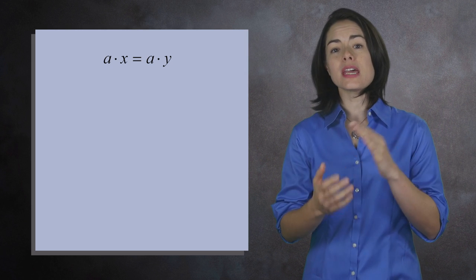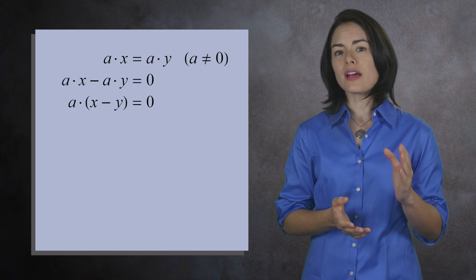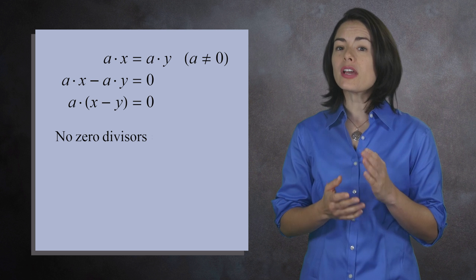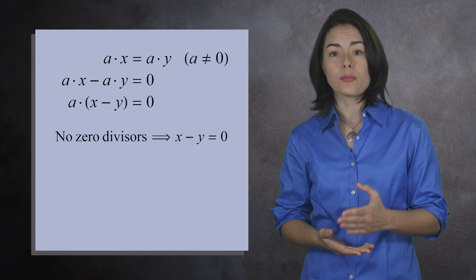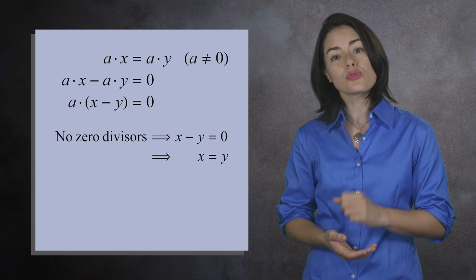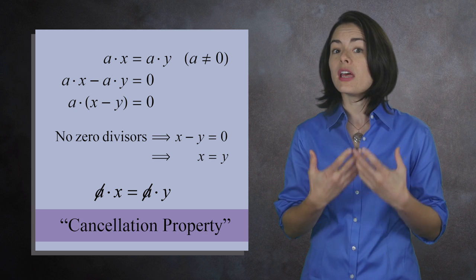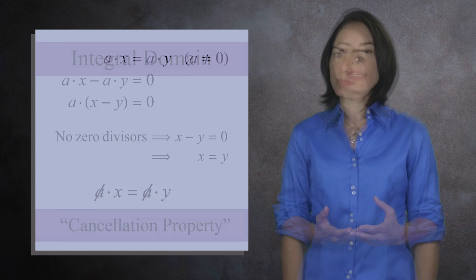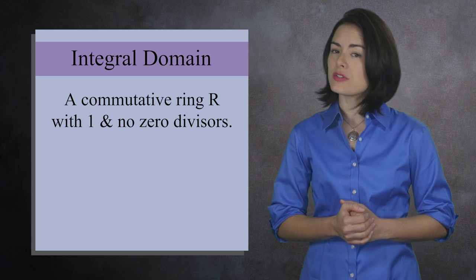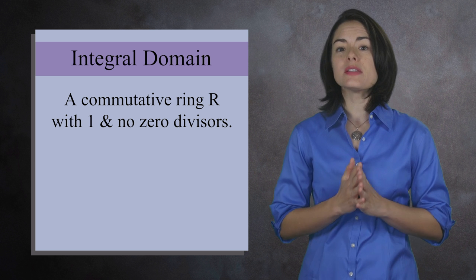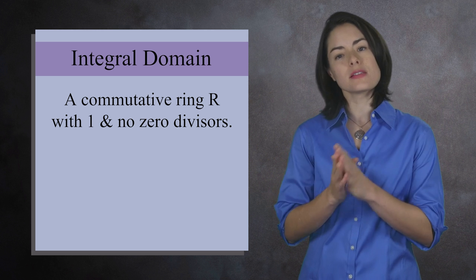So when can you safely cancel? Suppose ax equals ay in some ring R, and a is not 0. If we get everything on one side, we can factor out a using the distributive property. If the ring R does not have any zero divisors, then we know x minus y must be 0, because a isn't 0, implying x equals y — we can cancel a from both sides. So another benefit of an integral domain is the cancellation property. To recap: an integral domain is a commutative ring R with 1 that has no zero divisors, which means you can use the cancellation property and solve equations by factoring and setting the terms to 0.